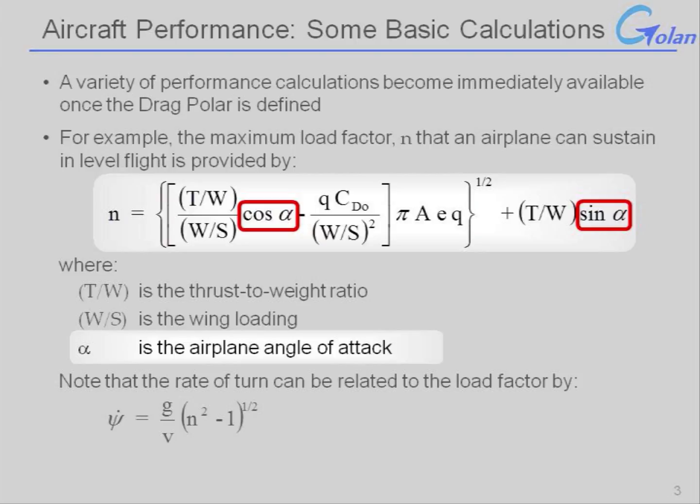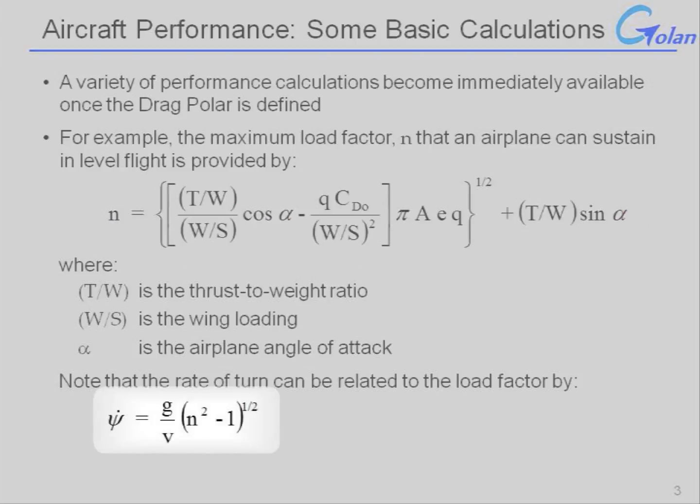What this means is that for low angle of attack approximations, we can actually drop the direct relationship to the thrust-to-weight ratio, which would be appropriate for a civilian airliner. For high-performance aircraft, you need to keep that relationship in.